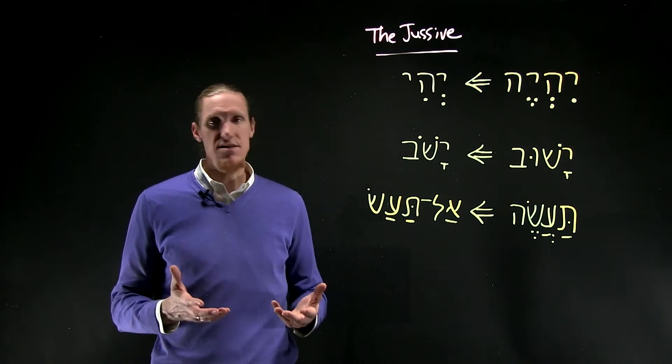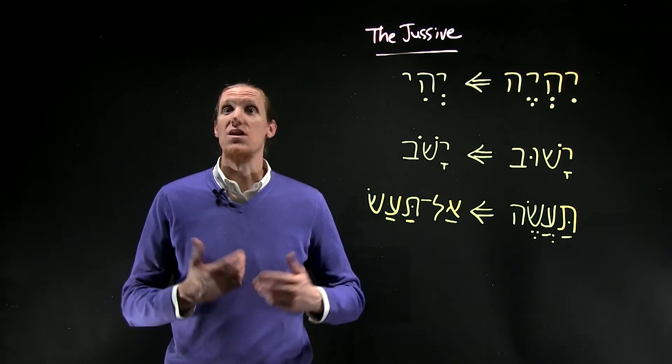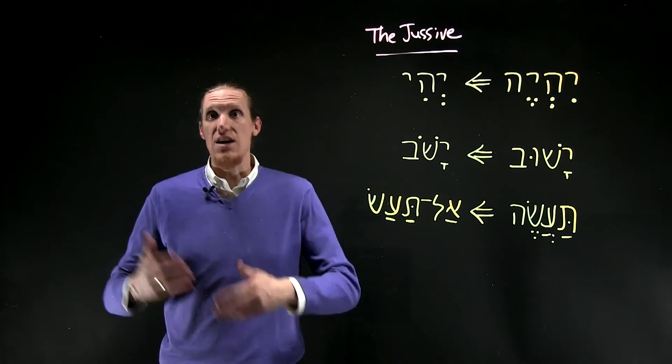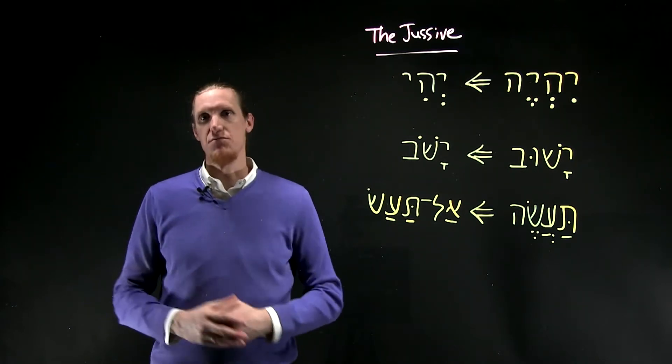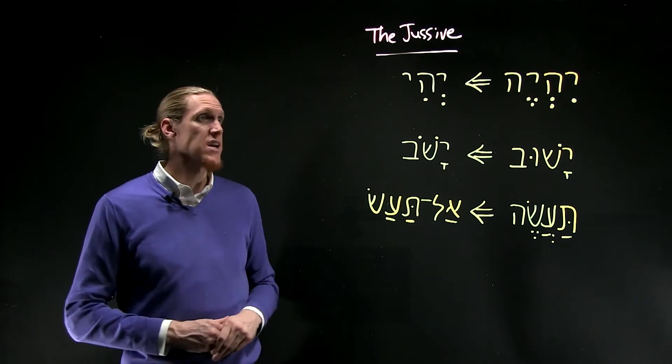Often, ways of translating subjunctive into English would be using the word let or may: let there be light, may we do something, something like that. Let's look at a couple of examples. Hopefully, it will make it a little bit clearer.